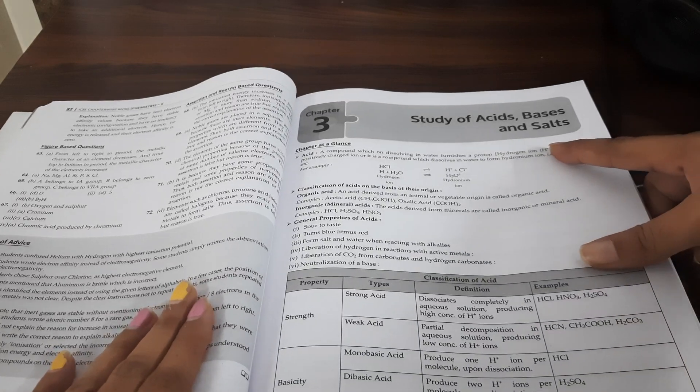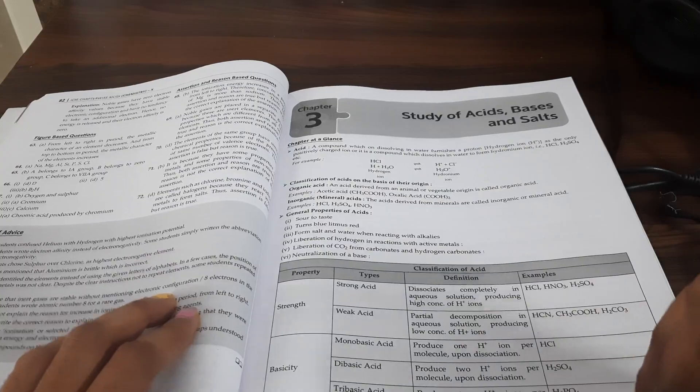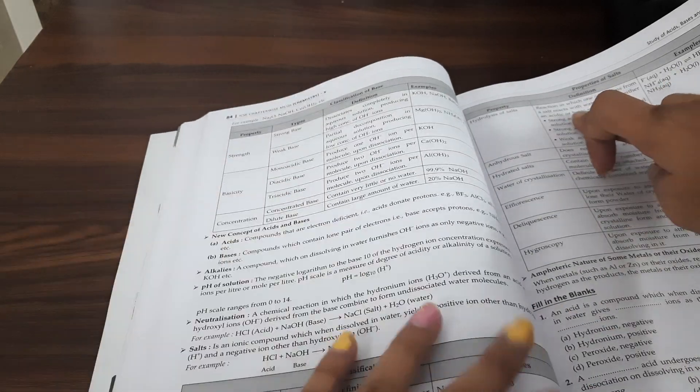They have given chapter at a glance initially. Properly in tabular form, they have given this. This was chapter at a glance. The concepts. Till here they have given all the concepts.